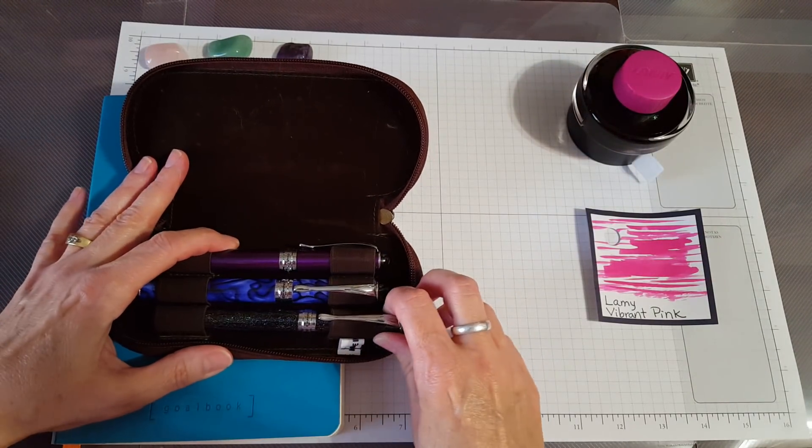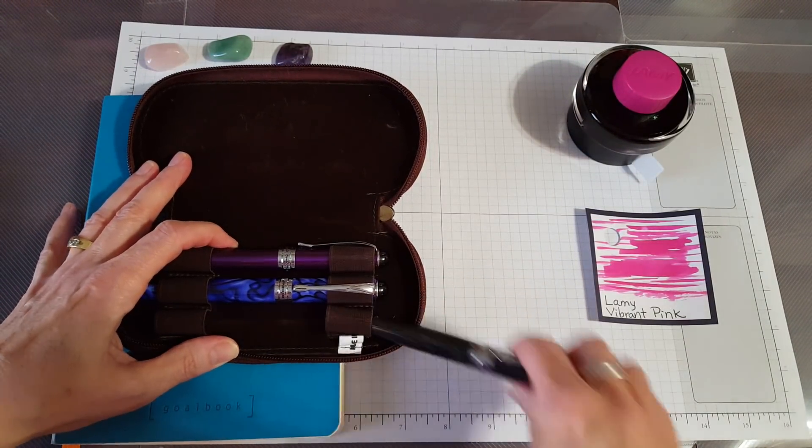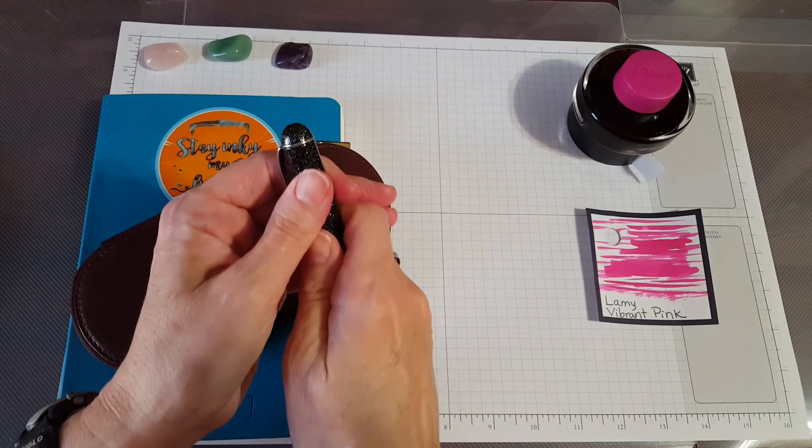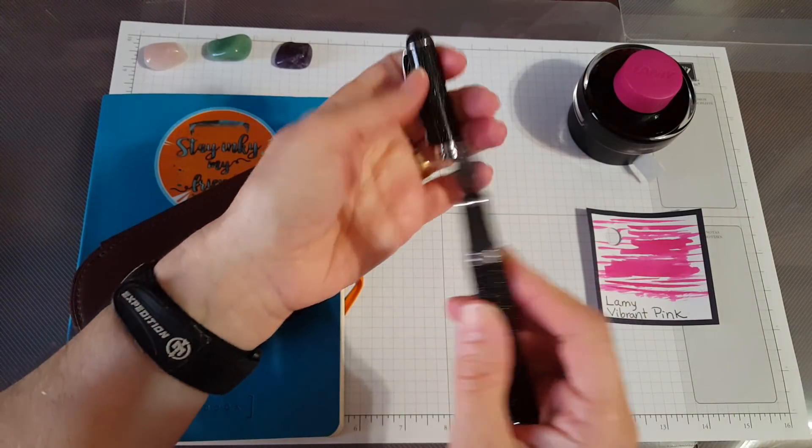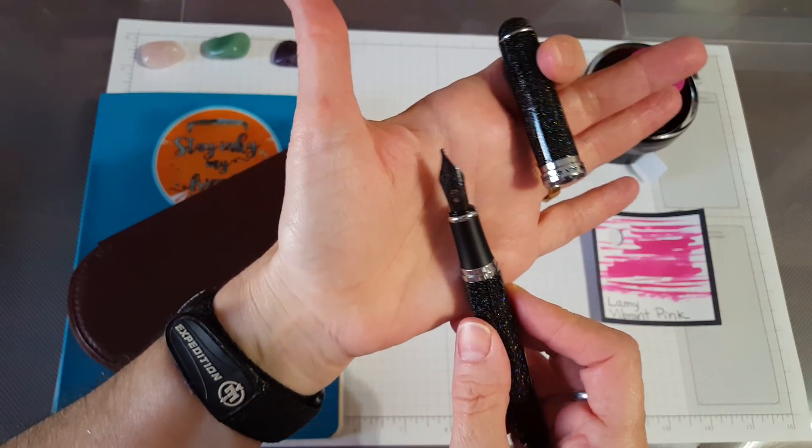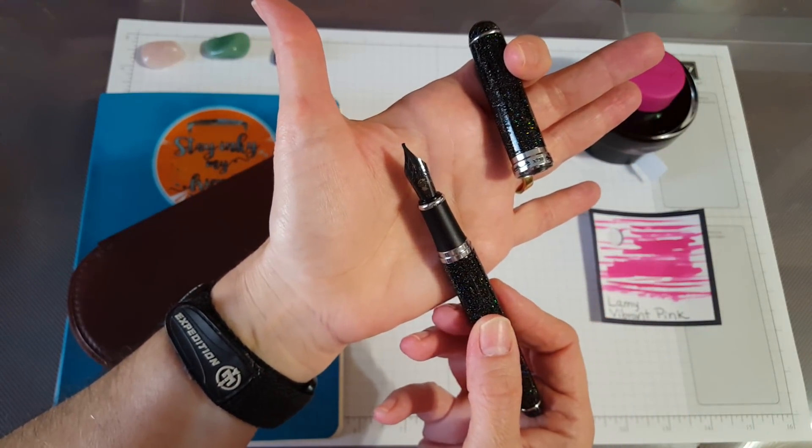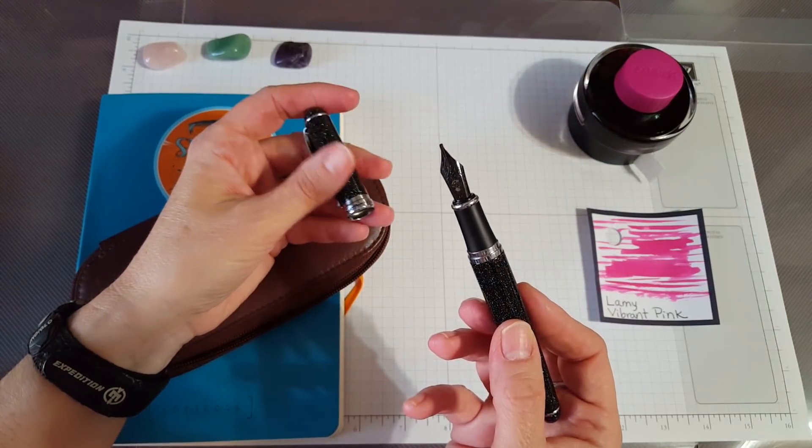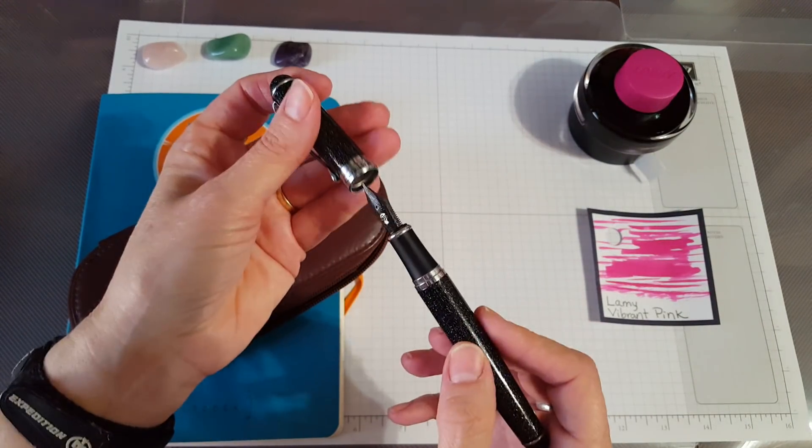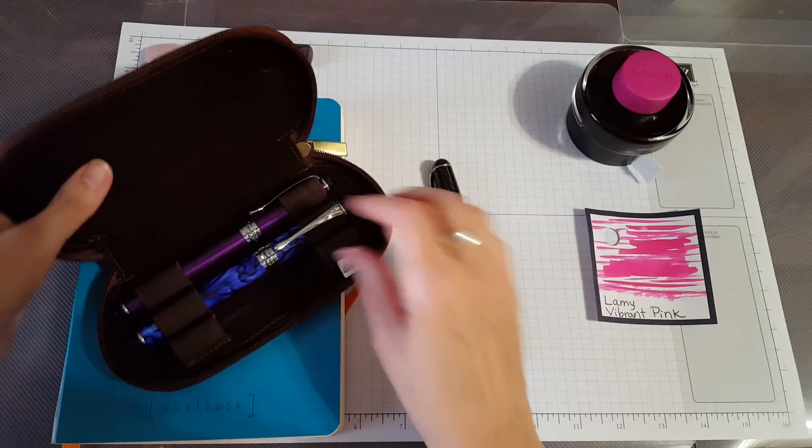These are my Jinhaos and what I did with my pen allowance was I did go ahead and get a 1.1 Goulet nib for this pen, the Shimmering Sands. I had a 1.5 millimeter Goulet nib and I've got that one over on this pen.